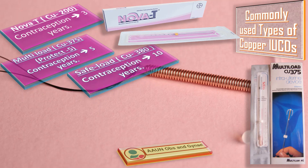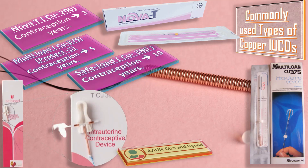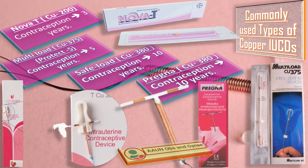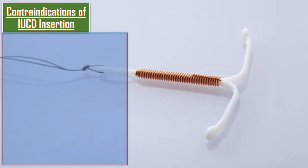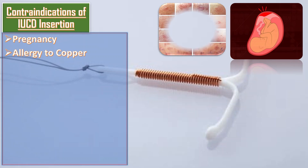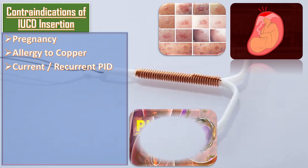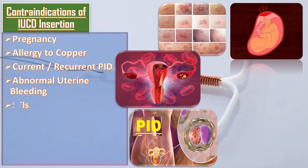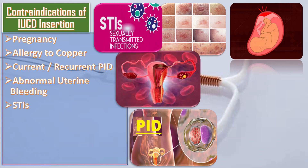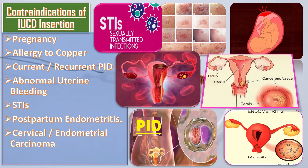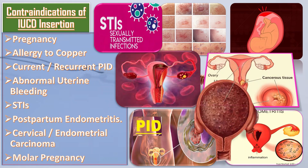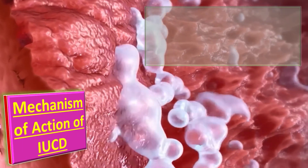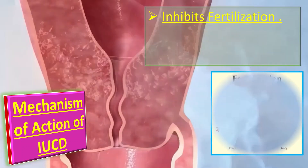Next is Safe-load Cu380, which provides contraception for up to 10 years, and the last one is Pregna Cu380, which also provides contraception for up to 10 years. Contraindications of IUCD insertion include: pregnancy, allergy to copper, current or recurrent PID, abnormal uterine bleeding, sexually transmitted infections, postpartum endometritis, and cervical or endometrial carcinoma, and molar pregnancy.